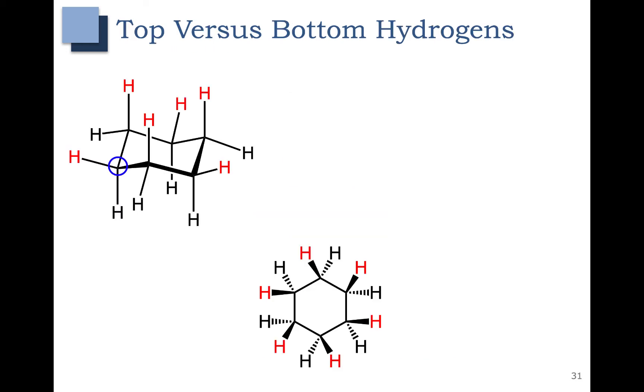Now let's look at our cyclohexane as compared to a hashed wedge drawing shown down here. In the hashed wedge drawing, I have all of the hydrogens that are sticking out or towards you in red. All of these hydrogens correlate to these up hydrogens shown in the chair conformation.